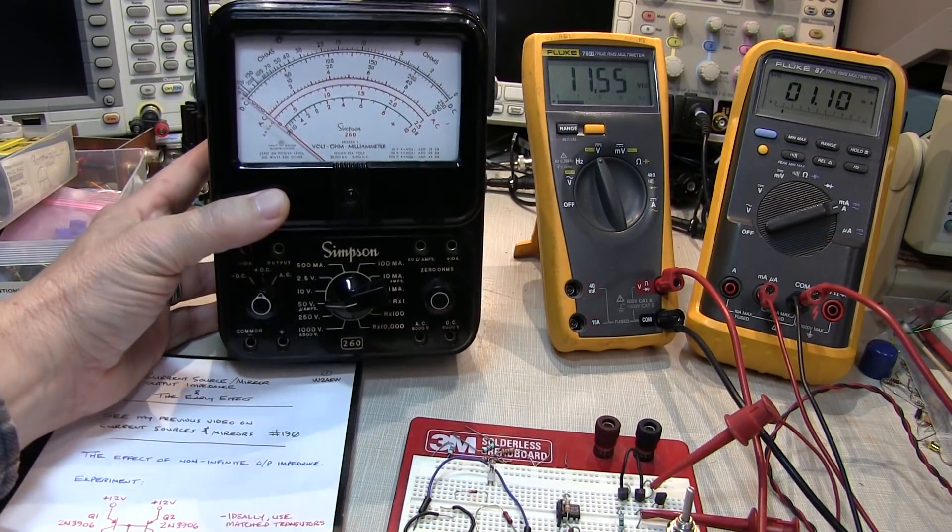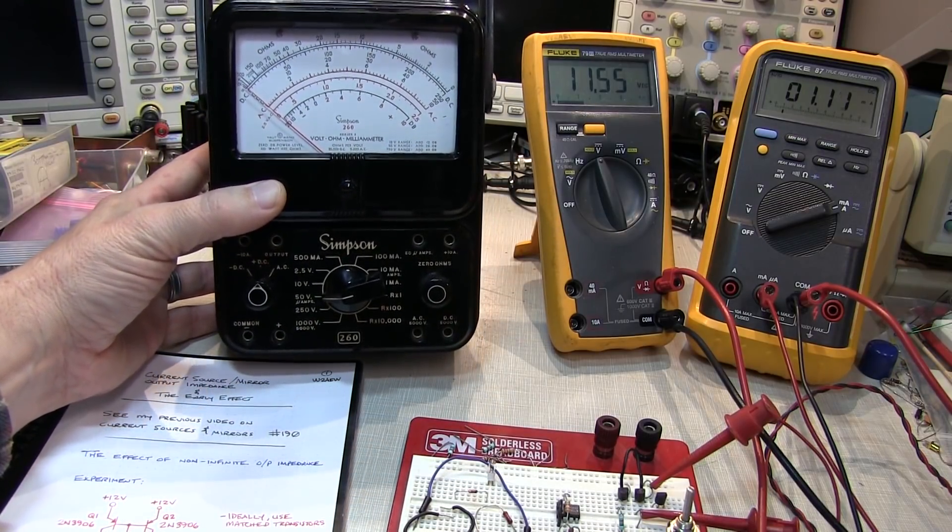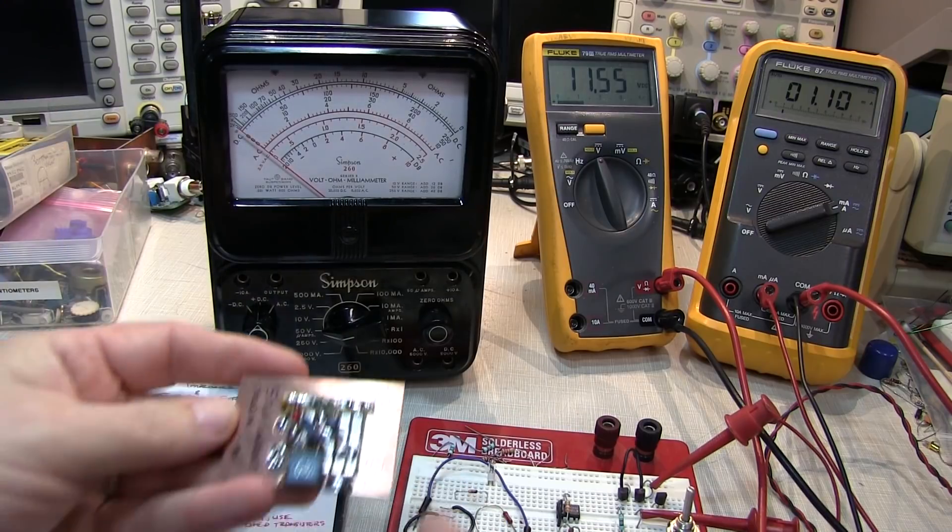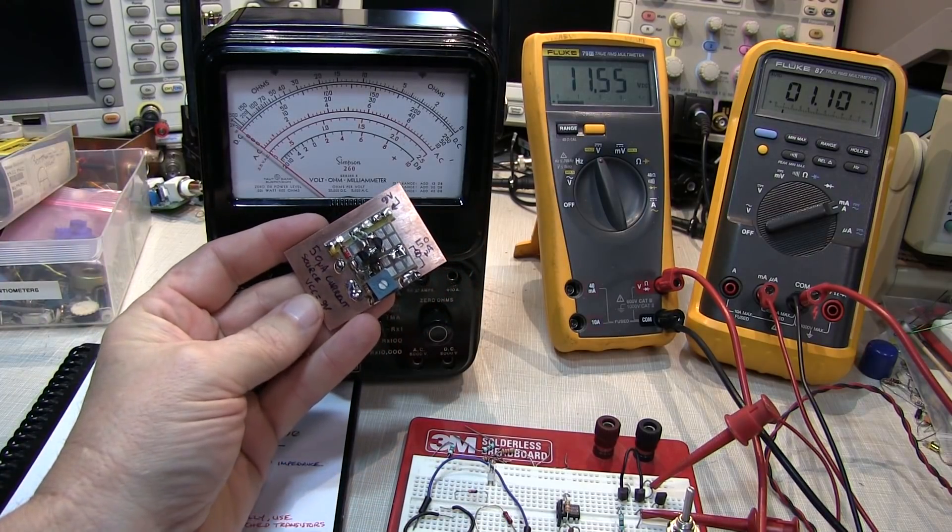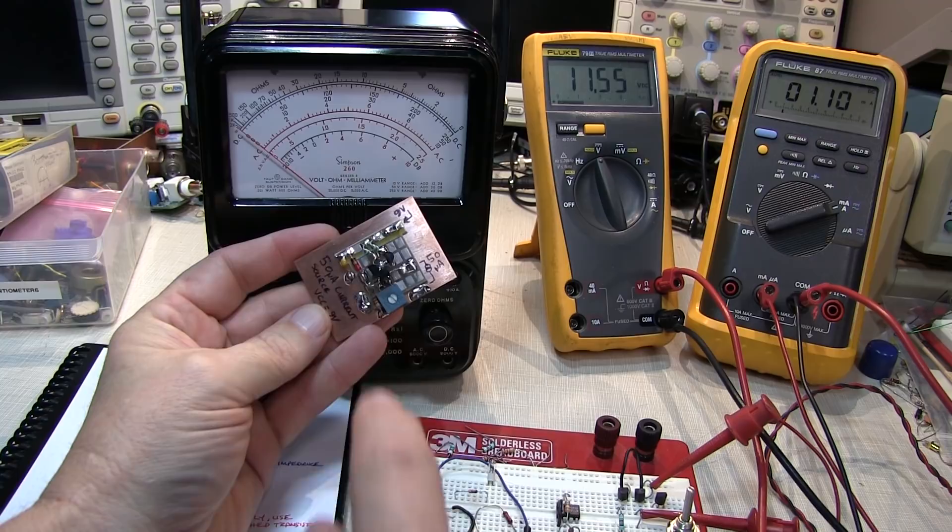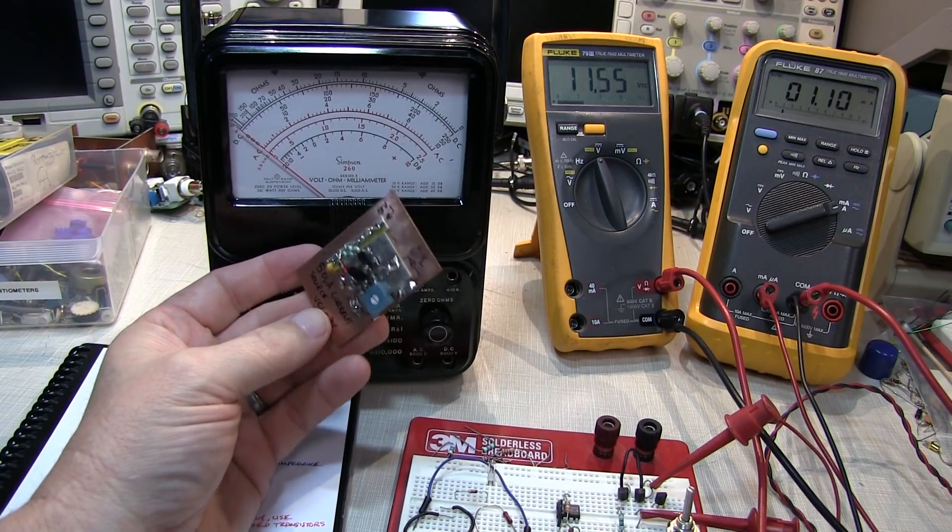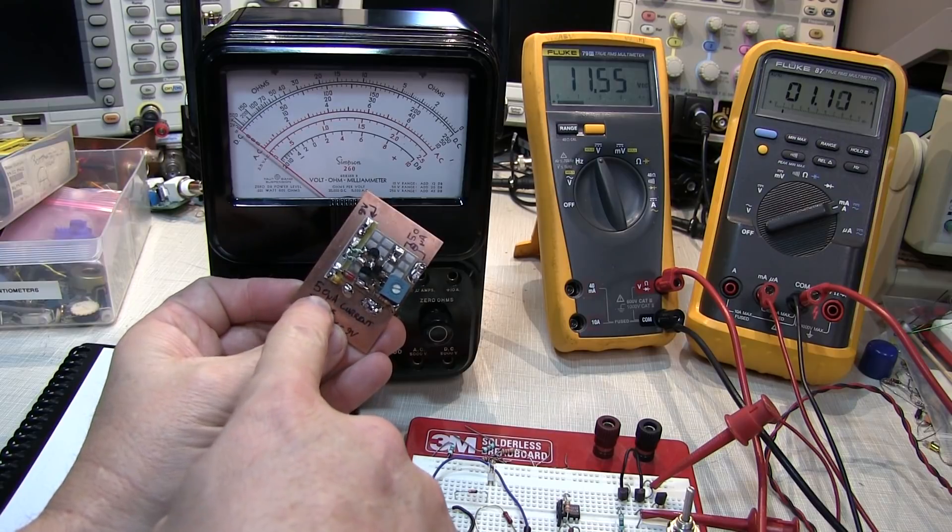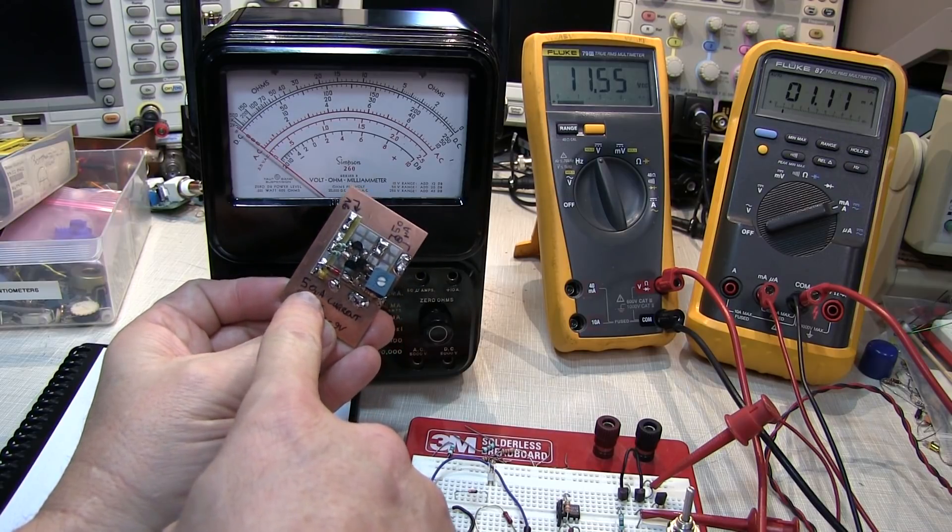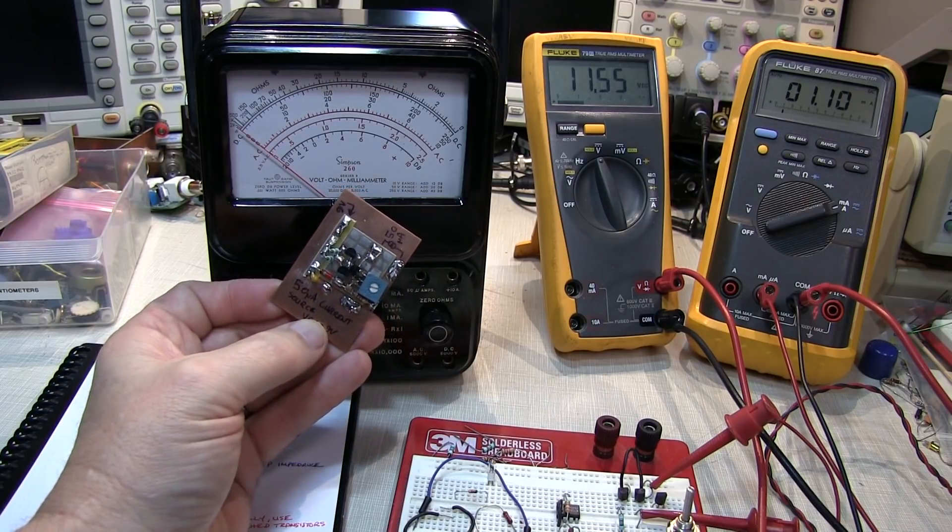Now back in video number 324, where I showed how to calibrate the Simpson 260, I had used this 50 microamp current source that I built. And I had mentioned that I had used a Wilson current mirror as part of this current source to improve the stability of the 50 microamp current, regardless of the burden voltage presented by the meter.